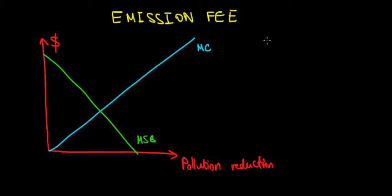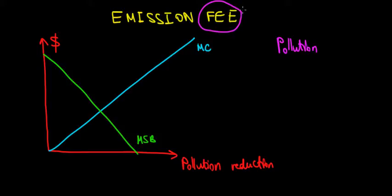We have a company producing output and it pollutes the environment. Because we want less pollution, we would like to charge a fee — let's call that fee a tax. This is the emission fee we're speaking about; let's just call it a tax because it's easier to say. We charge a tax for every unit of production, and we'll call that tax the fee F.